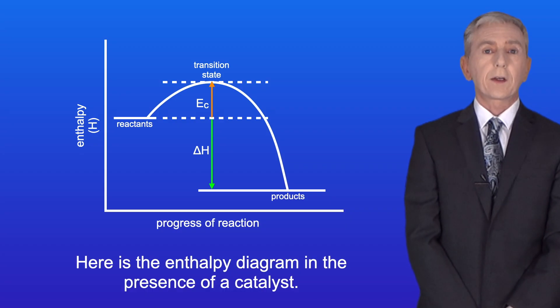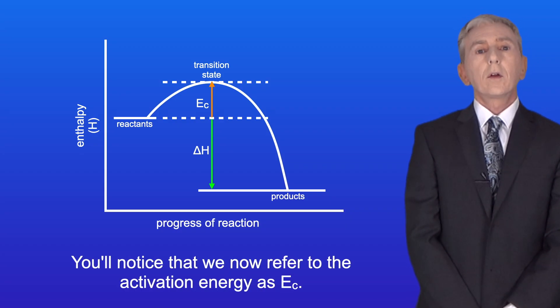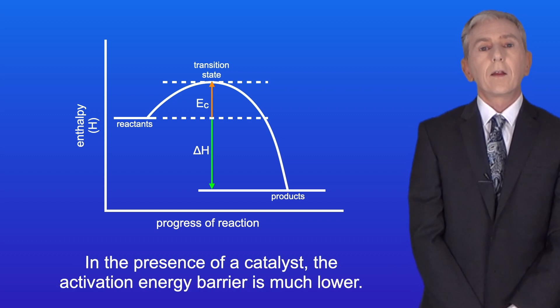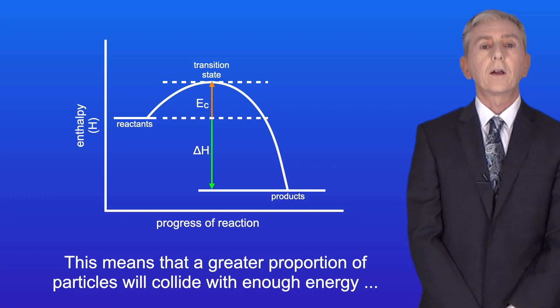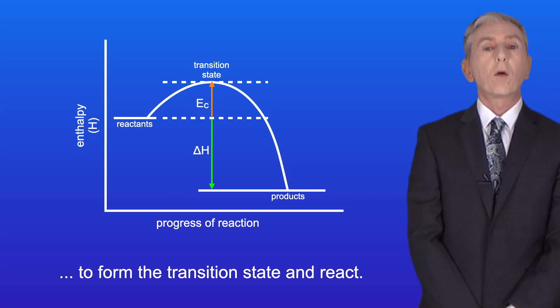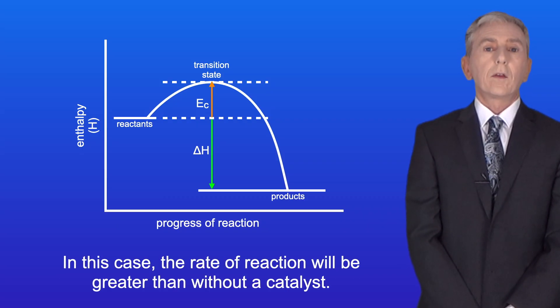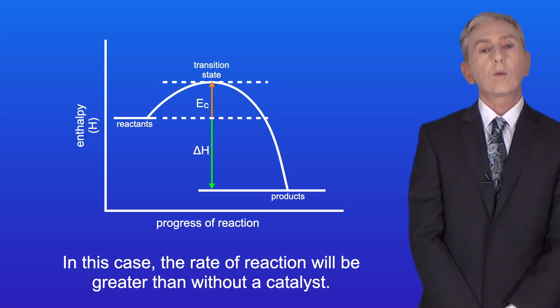Here's the enthalpy diagram in the presence of a catalyst. You'll notice that we now refer to the activation energy as EC. In the presence of a catalyst, the activation energy barrier is much lower. This means that a greater proportion of particles will collide with enough energy to form the transition state and react. So in this case, the rate of reaction will be greater than without a catalyst.